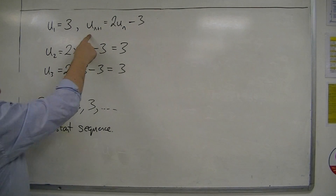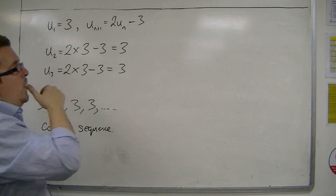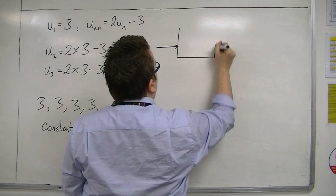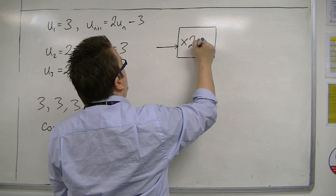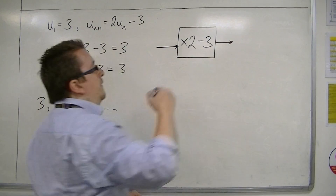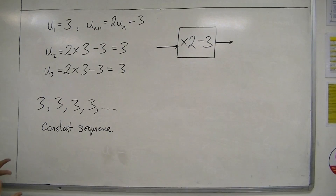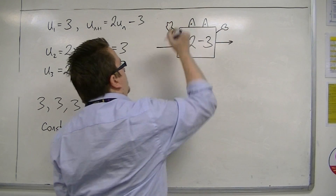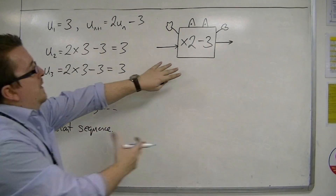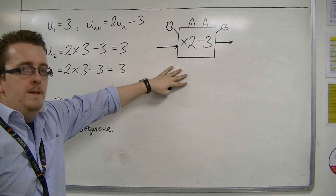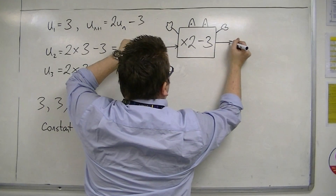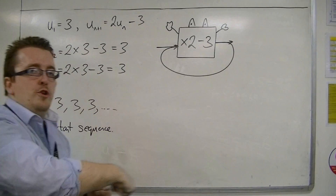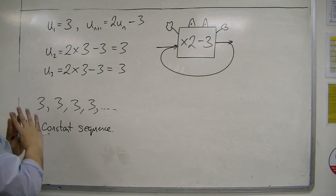If I think of this as a function machine, what I'm doing is putting values in to a function machine that multiplies the value by 2 and then subtracts 3, and I get a value out. You may have remembered doing these back in primary school — we used to put funny eyes on them. The function is multiplying by 2 and taking away 3. I'm going to put that number back in, and keep on putting that number into that function machine over and over again. What happens is I just generate the same sequence.